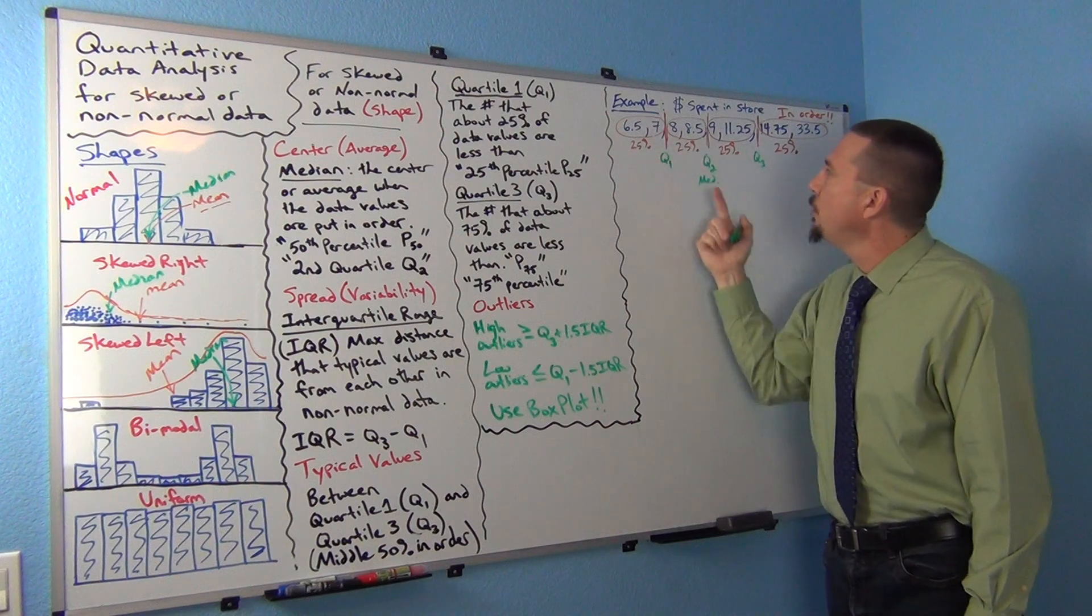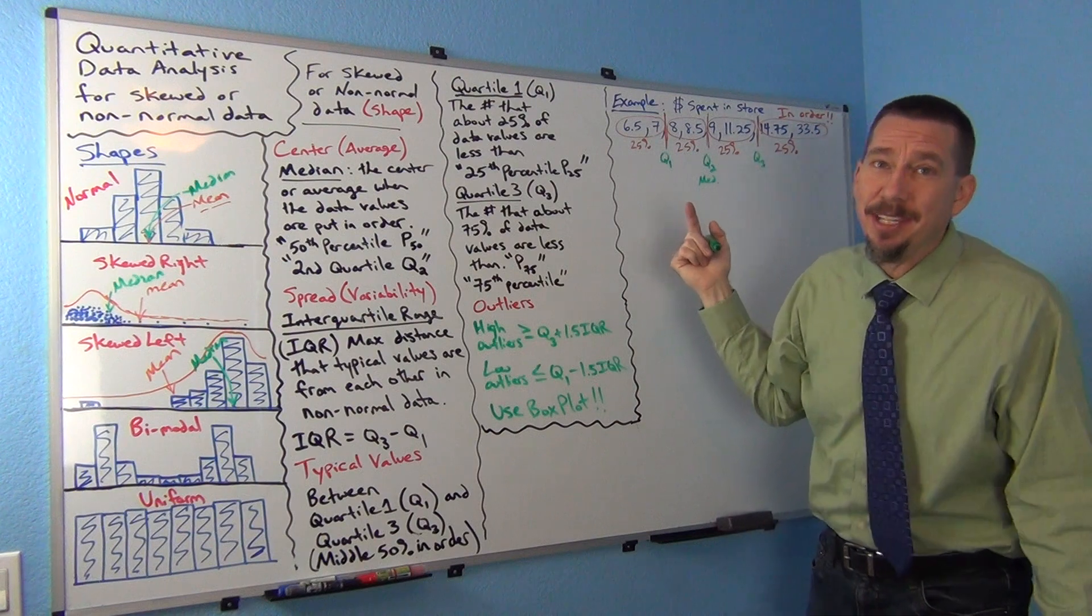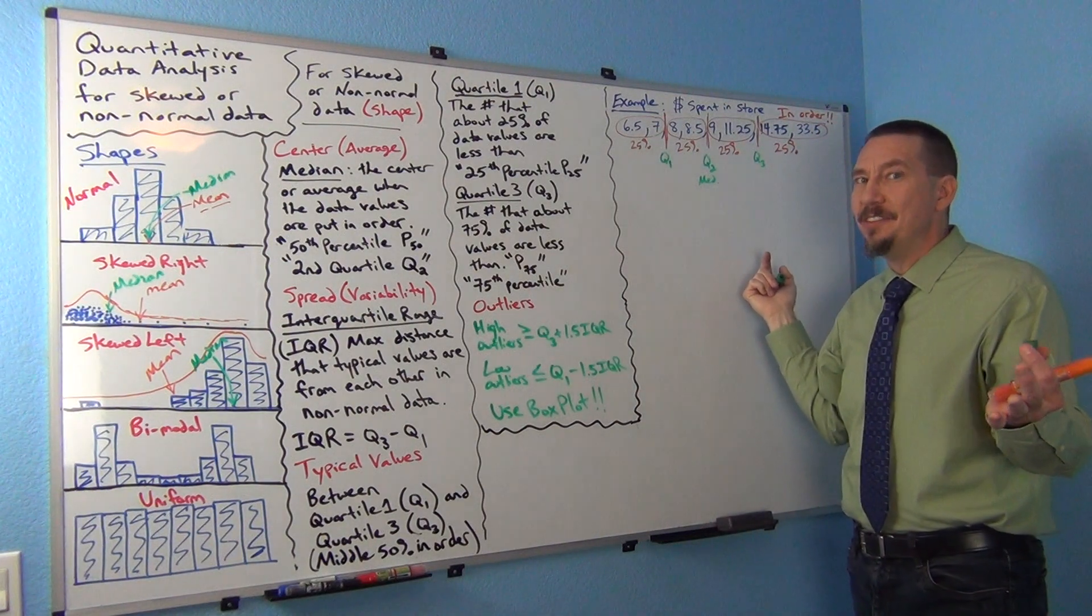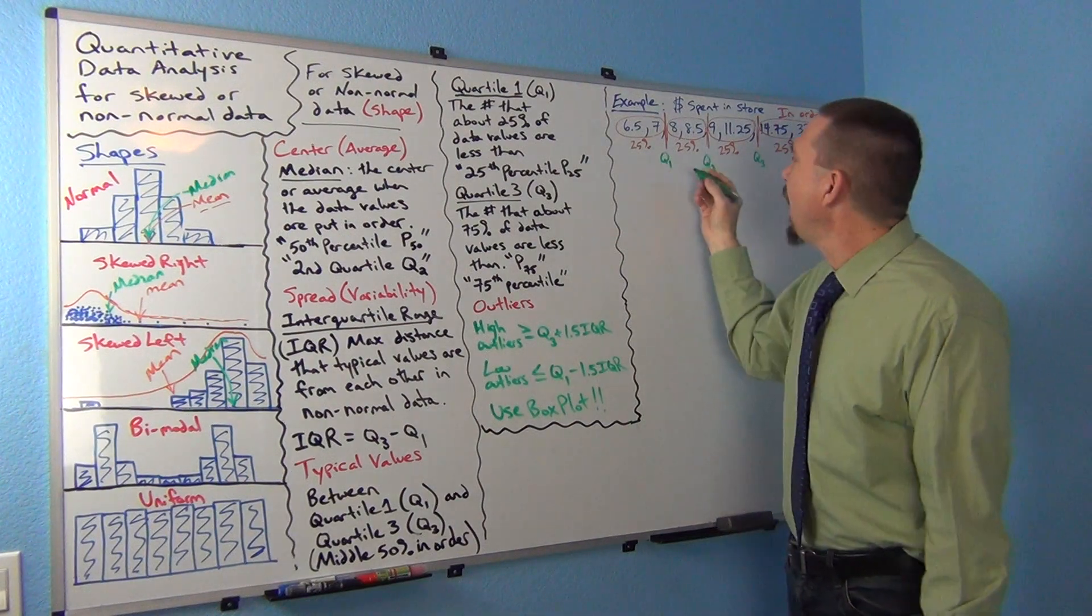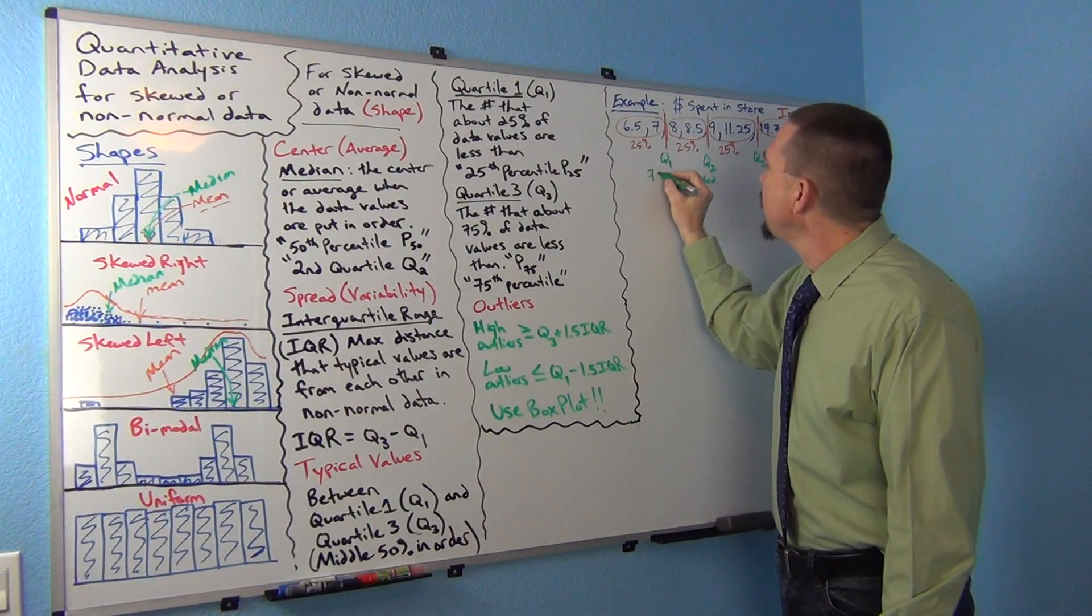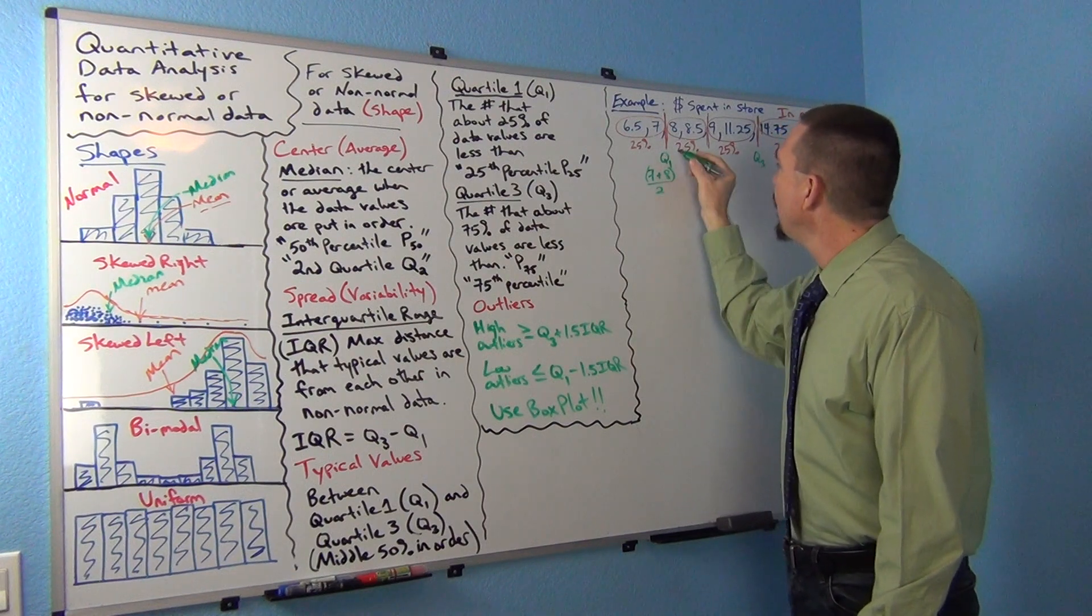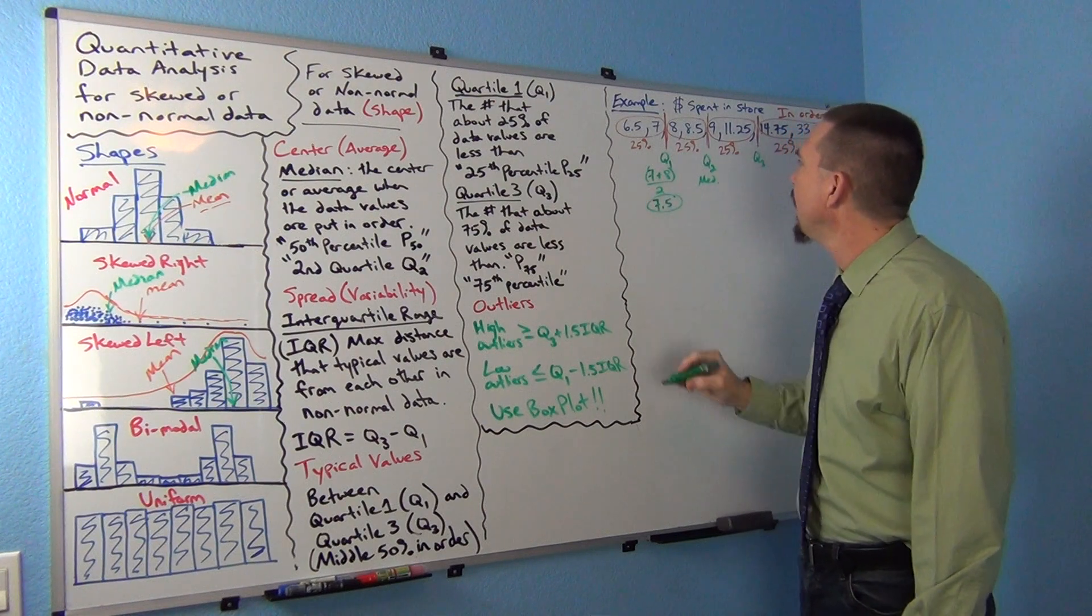You usually go halfway in between. If I was looking for quartile one, I might guess what halfway between 7 and 8 is. If you said 7.5, you're right. But if you couldn't figure that out, you could add the two numbers and divide by two. You would get quartile one would be 7.5.